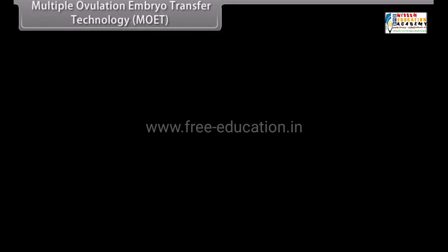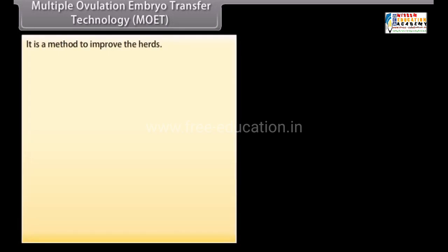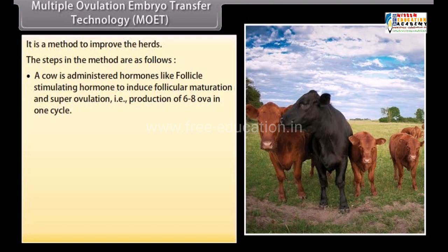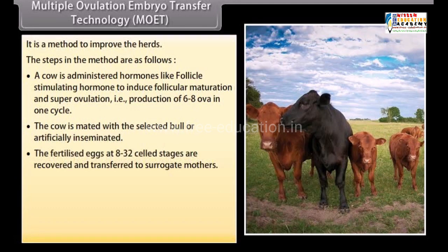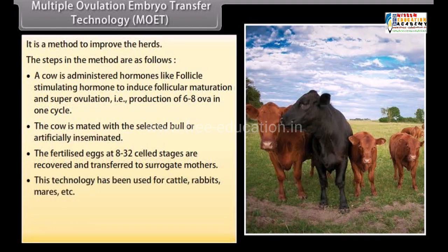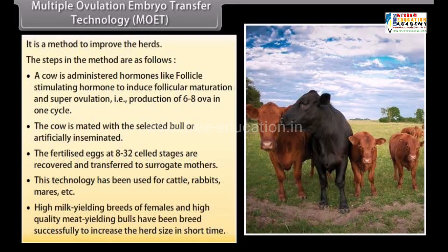Multiple Ovulation Embryo Transfer (MOET) technology is a method to improve herds. A cow is administered hormones like follicle stimulating hormone to induce super ovulation, producing 6 to 8 ova in one cycle. The cow is mated with a selected bull or artificially inseminated, and the fertilized eggs at 8 to 32 celled stages are recovered and transferred to surrogate mothers. This technology has been used for cattle, rabbits, and mares to increase herd size in the short term.